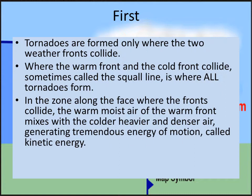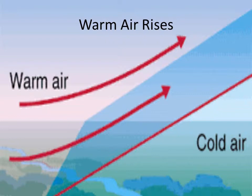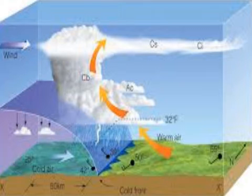In the zone along the face where the fronts collide, the warm moist air of the warm front mixes with the colder, heavier, and denser air, generating tremendous energy of motion called kinetic energy. This energy is used to create the tornado. The warm moist air pushes into the face of the cold front, then pushes up and over it. The warm air rises and cold air goes down. Warm air rises and cold air settles, sinks to the lowest level it can find — a simple concept, but very important when trying to understand how a tornado is formed.